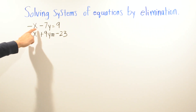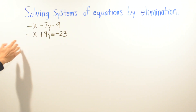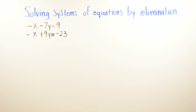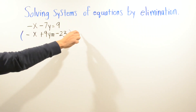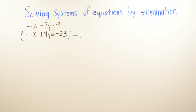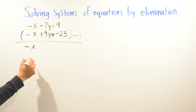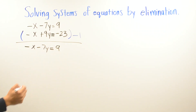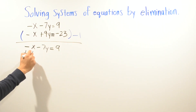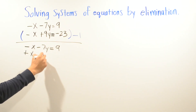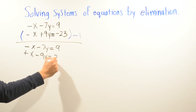In the next example we have negative x minus 7y equals 9 for the first equation, and negative x plus 9y equals negative 23 for the second. We got lucky because both equations have an x coefficient of negative 1. To eliminate x, one has to be negative and one positive, so I'll multiply the bottom equation by negative 1. That gives: positive x minus 9y equals positive 23.